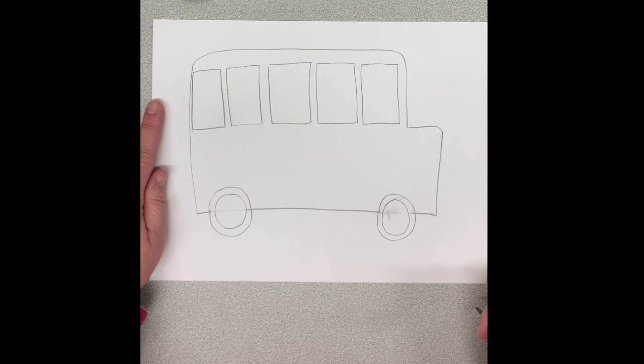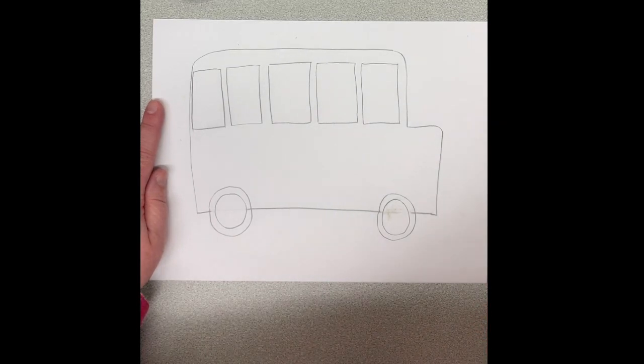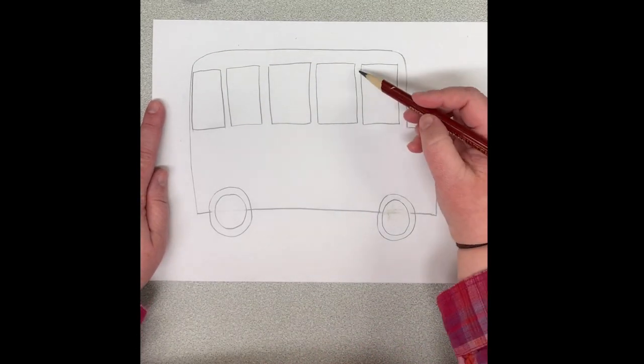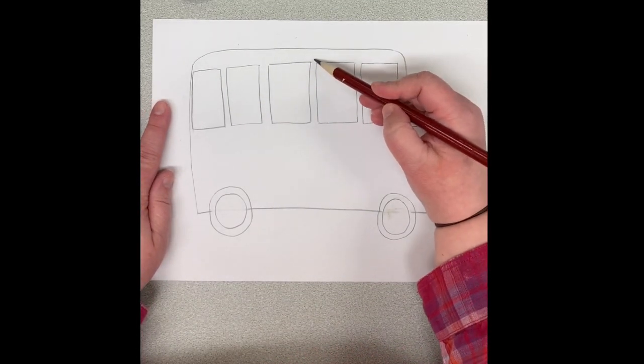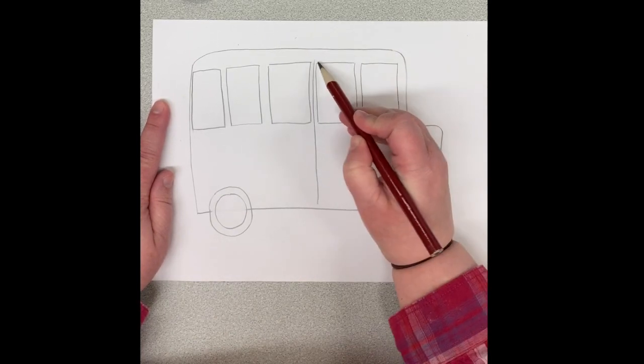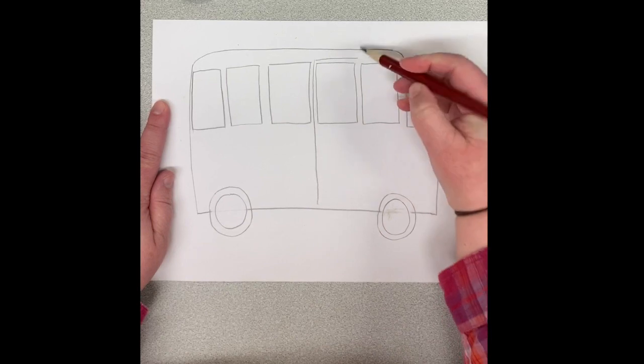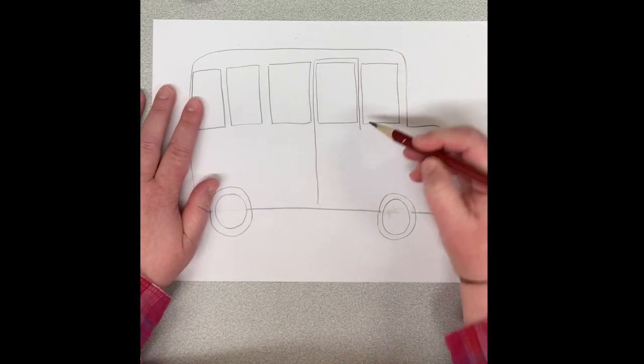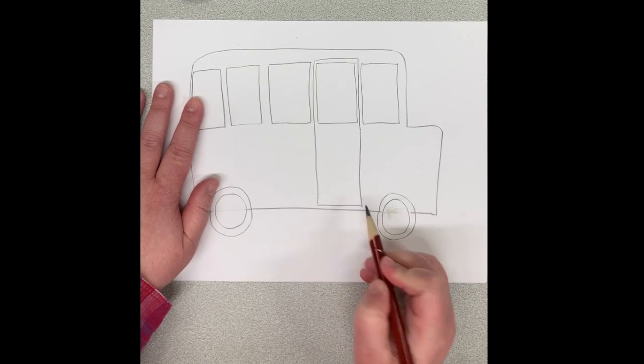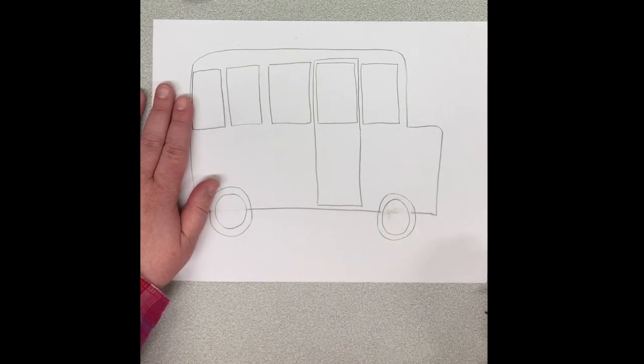Our next step is to draw the door on the bus. The door on my bus is going to go right around my second window, so right around here. I'm going to draw a line all the way to the bottom, and a line across the top, a line all the way to the bottom, and a line across. There is our door.